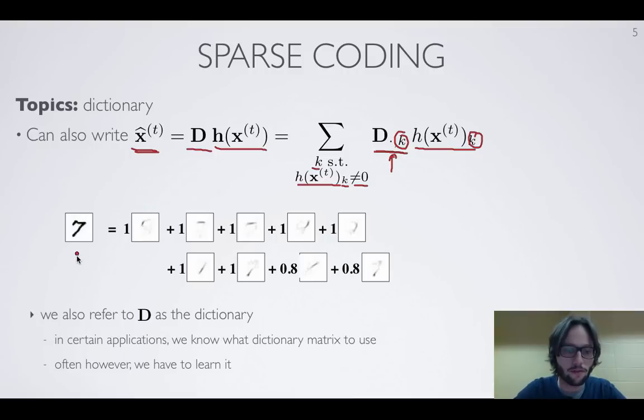For instance, if we run the sparse coding model of images of characters, well, one thing we could get, so by the way, this is an illustration from a paper by Marco Rello and Zato and colleagues. So if we had this image, then one thing we could obtain is that this image can be decomposed as a linear combination of different pen strokes.